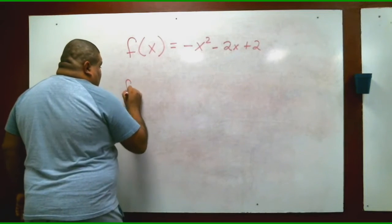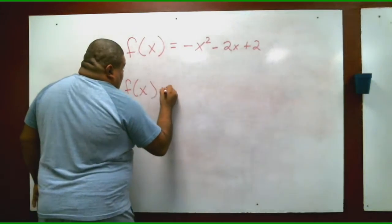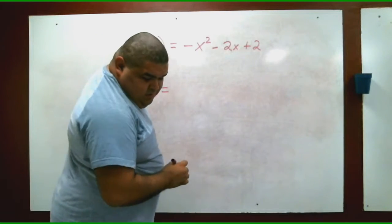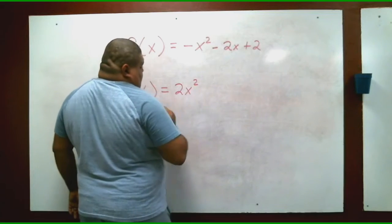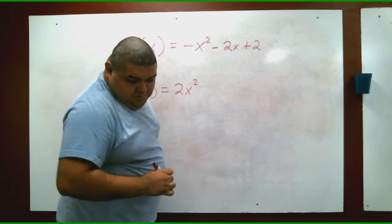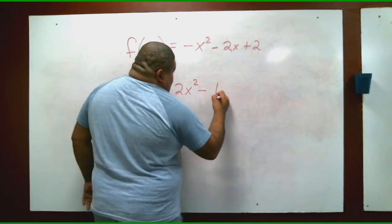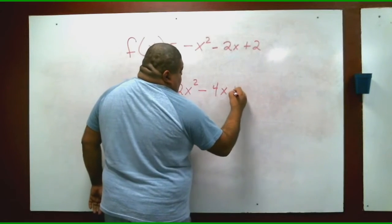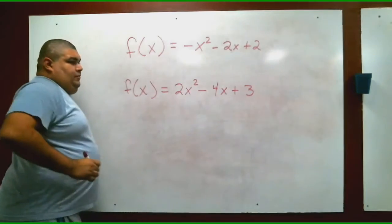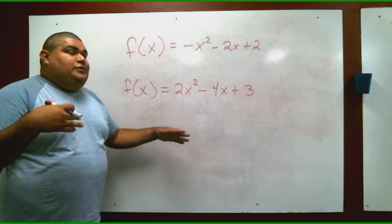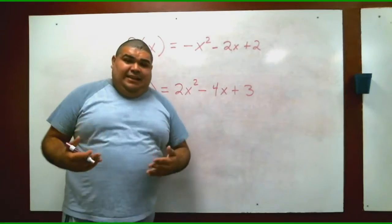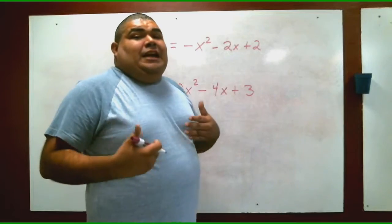Your second one is f(x) equals 2x² minus 4x plus 3. That's your second example. Again, you're going to do the same thing, you're going to label it a, b, and c. You're going to solve for the x-vertex.